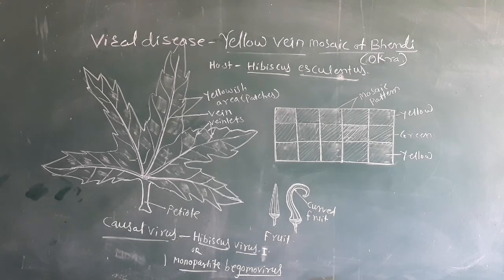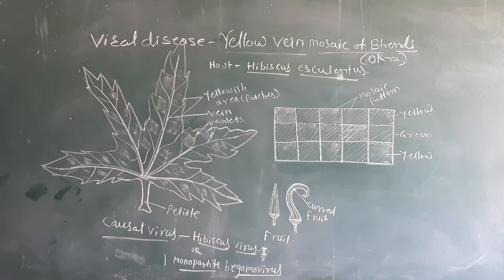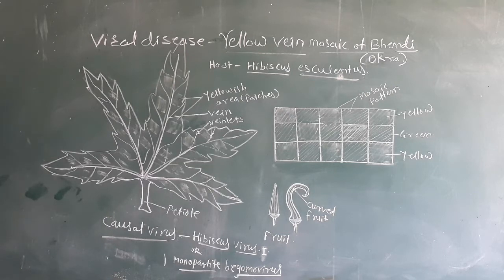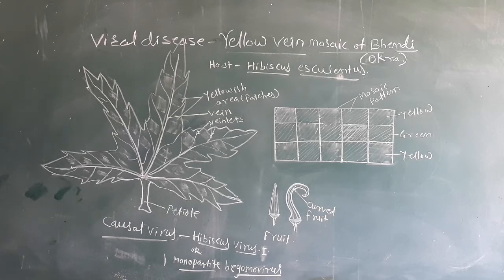Good afternoon. Today I am going to teach you the next disease — a viral disease — and the name of that disease is the Yellow Vein Mosaic of Bhendi. Bhendi is also known as okra or lady's finger, and the botanical name of bhendi is Hibiscus esculentus, also known as Abelmoschus esculentus. The topics covered are: introduction, disease cycle, transmission, causal organism, and control measures.